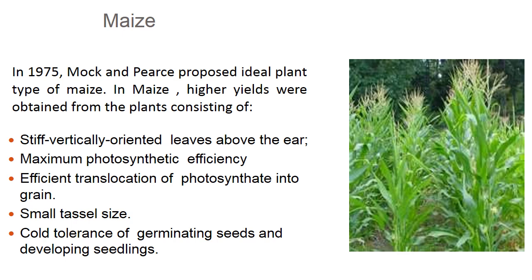Maize is an important cereal. In 1975, Mocks and Peers proposed an idiotype in maize where higher yields were obtained from plants consisting of stiff, vertically-oriented leaves above the ear, maximum photosynthetic efficiency, efficient translocation of photosynthates into grains, small tassel size, and cold tolerance for germinating seeds and developing seedlings.